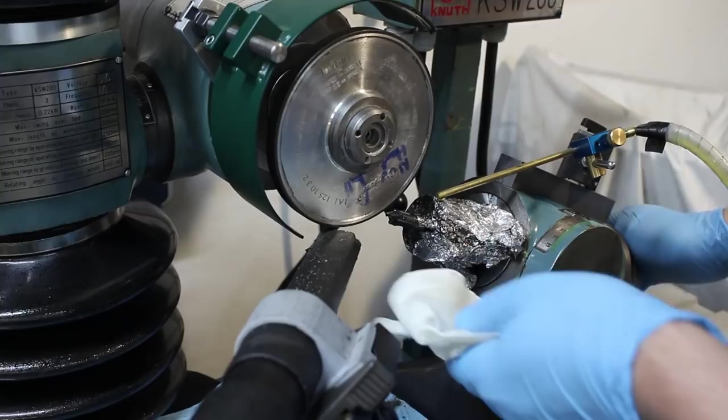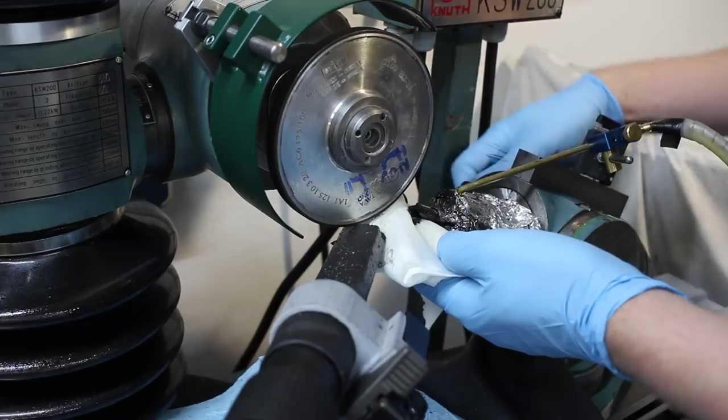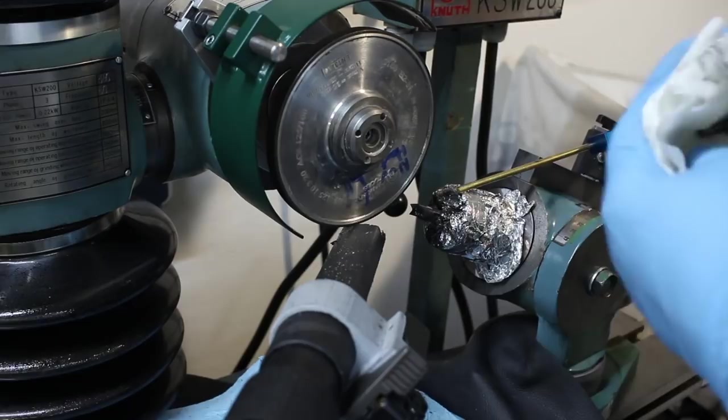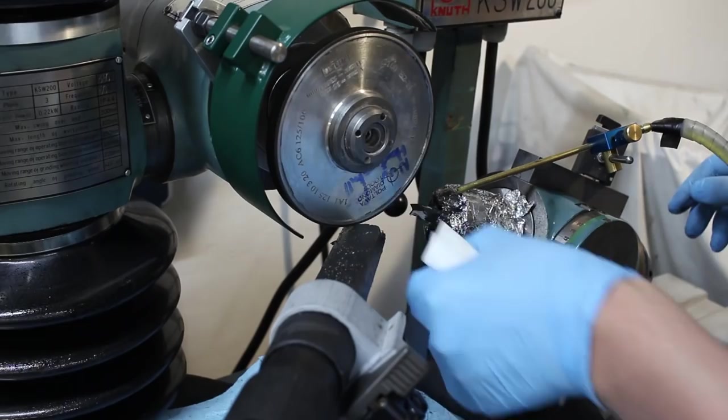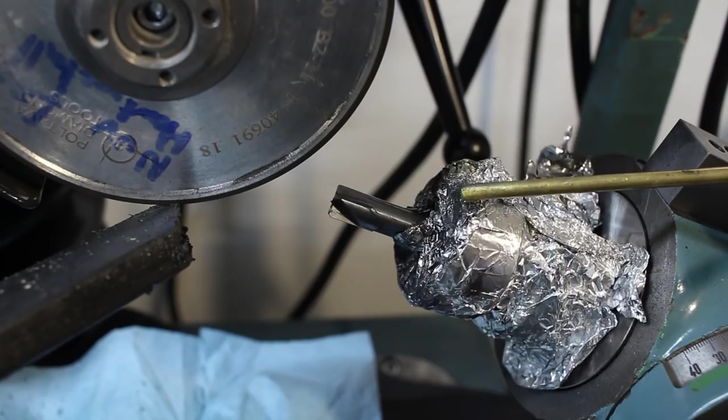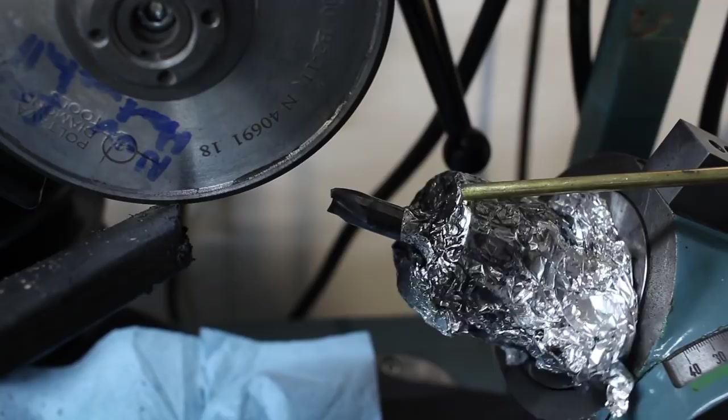So, grinding with oil is really messy. But as you saw, you can remove quite a bit of carbide in no time when you have something that keeps the cut cool and lubricates it.